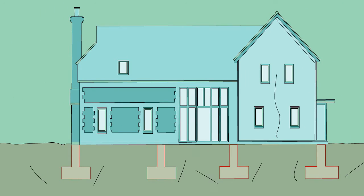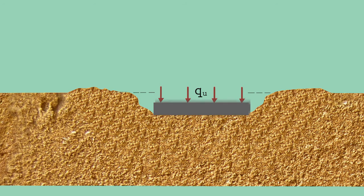In shallow foundations, failure can happen in three different modes. First is the general shear failure, which we explained in the last video.